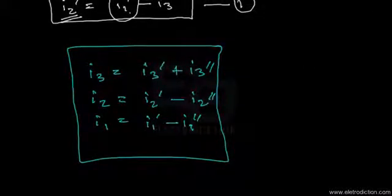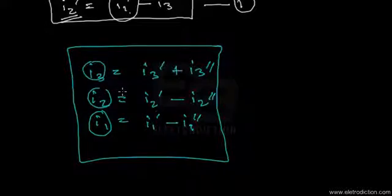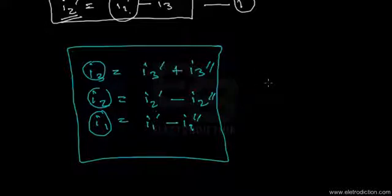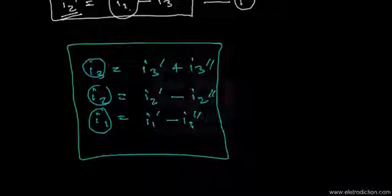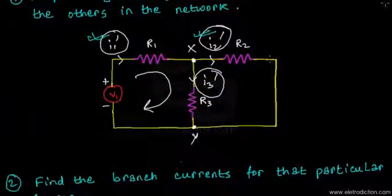With these values, the branch currents are found and the network is solved. One important note: if any resultant current such as I1, I2, or I3 comes out negative, don't panic — it simply means the assumed direction is opposite to the actual direction of current flow. That brings us to the end of this tutorial on the superposition theorem. Thanks for watching.